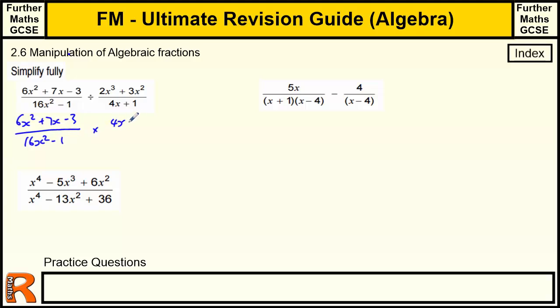So we've got a times by 4x plus 1 over 2x cubed plus 3x squared. Now this gives us some hints because if this is going to cancel, this has got to go into this. On this bottom bit here, 2x cubed plus 3x squared, that will factorise. If we take out x squared, we're left with 2x plus 3.